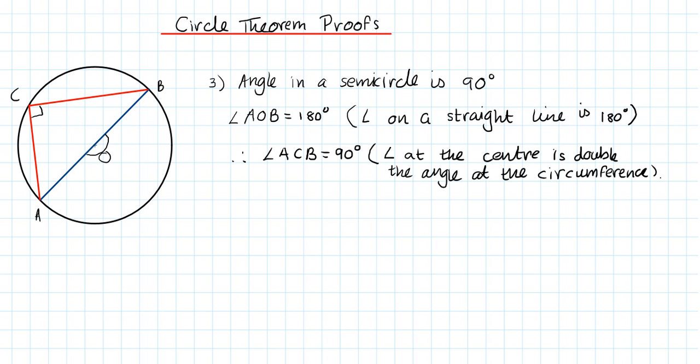So any angle that starts from one end of the diameter touches the circumference and goes back to the other end of the diameter will always be 90 degrees. Thank you for watching.